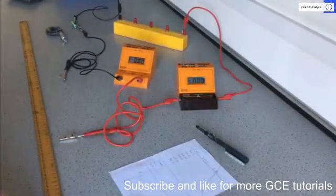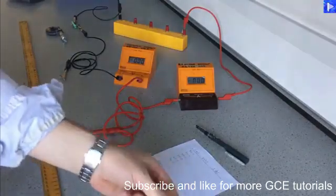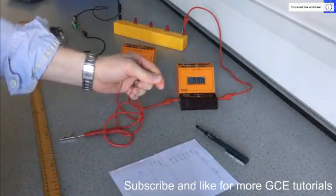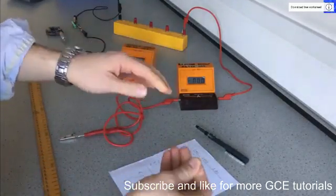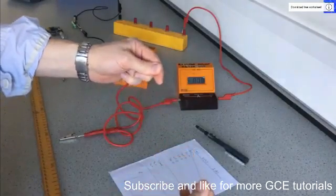This is an experiment to determine the resistivity of a metal wire. This is the wire that I will be using to take measurements for. It's a wire made out of a metal called Constantine.